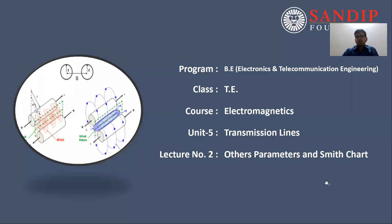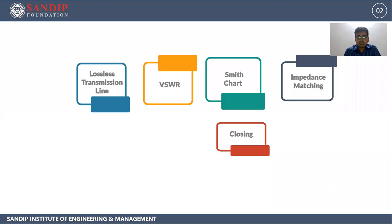Hello everyone. Today we are going to see the next topic in unit number 5. The name of the unit is transmission lines. In this unit, in today's session we are going to see other parameters related with transmission lines and also we are going to see Smith chart. In today's session our topics will be lossless transmission line, VSWR, Smith chart, and impedance matching.